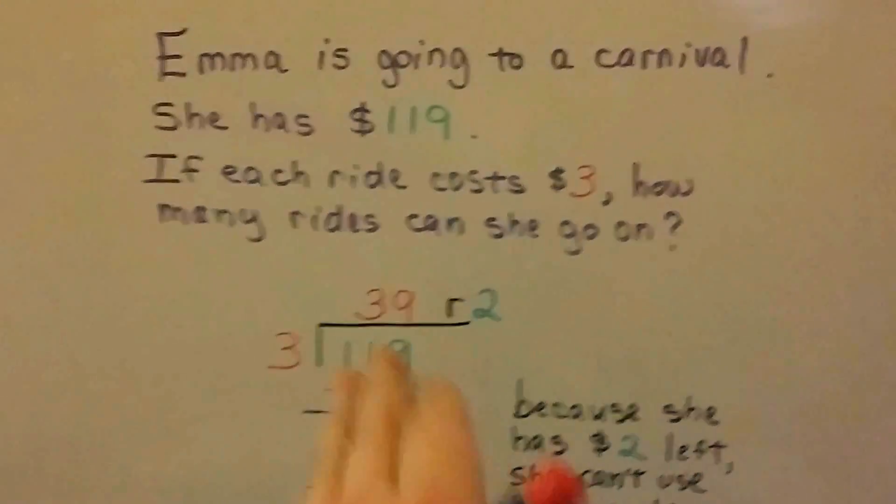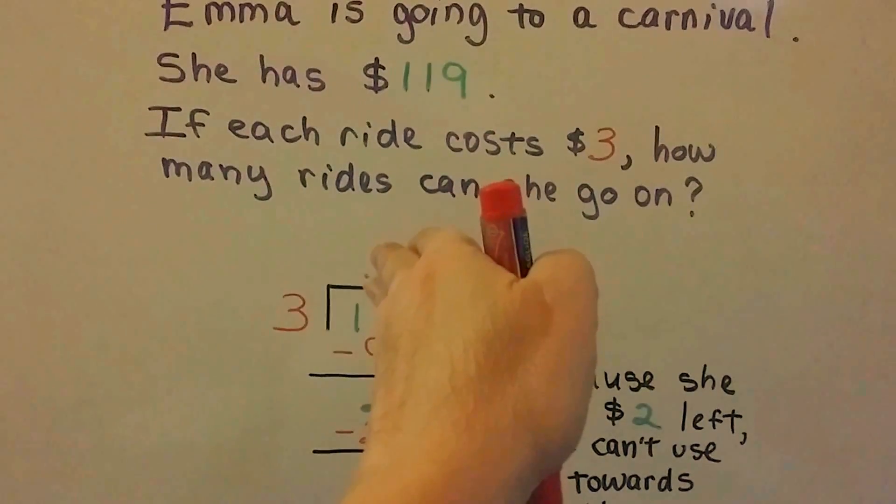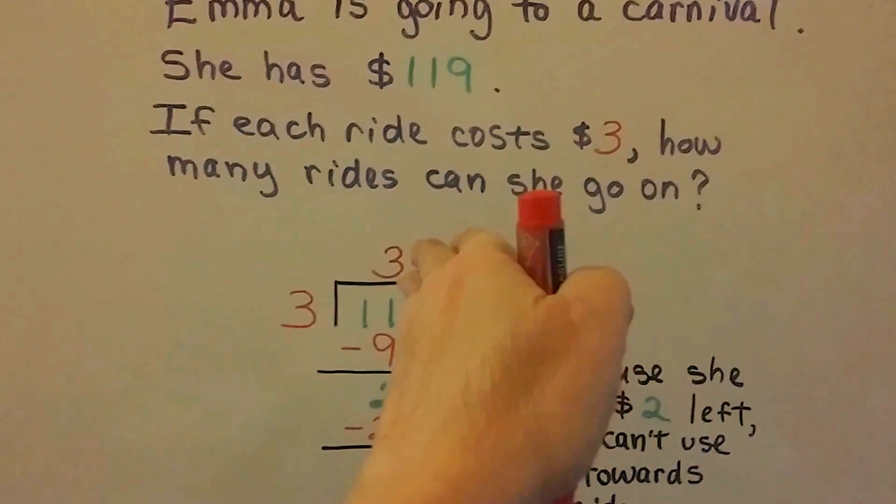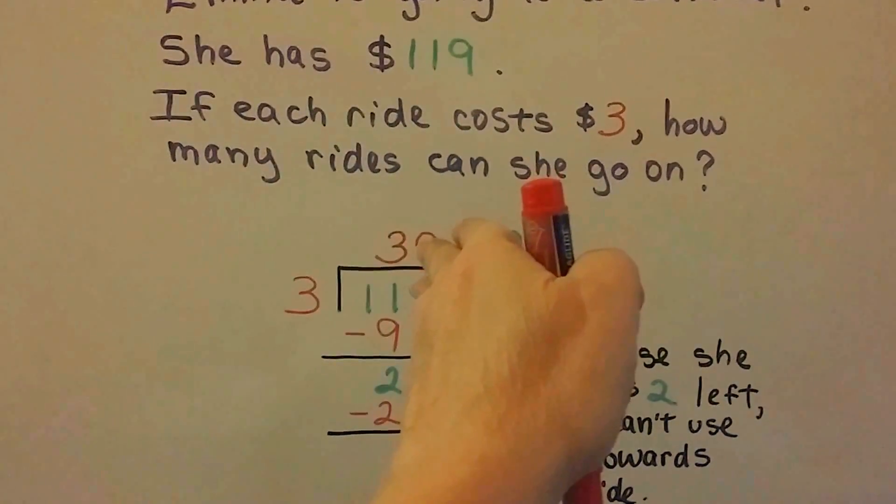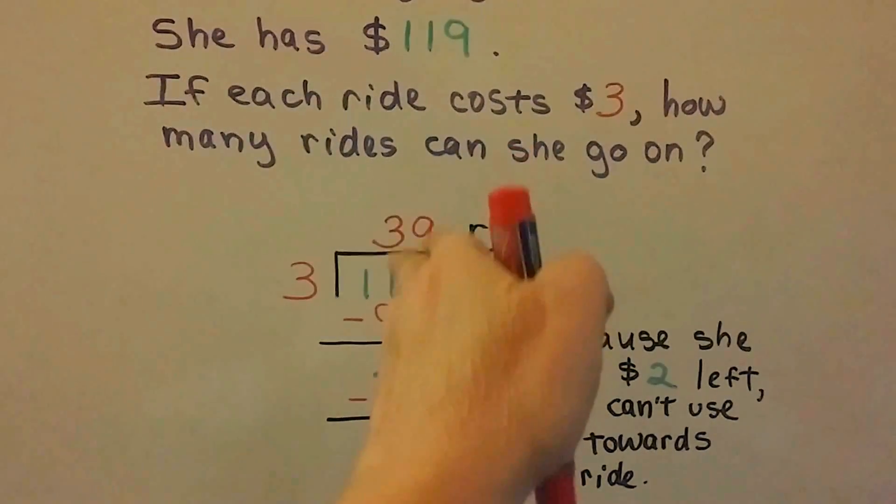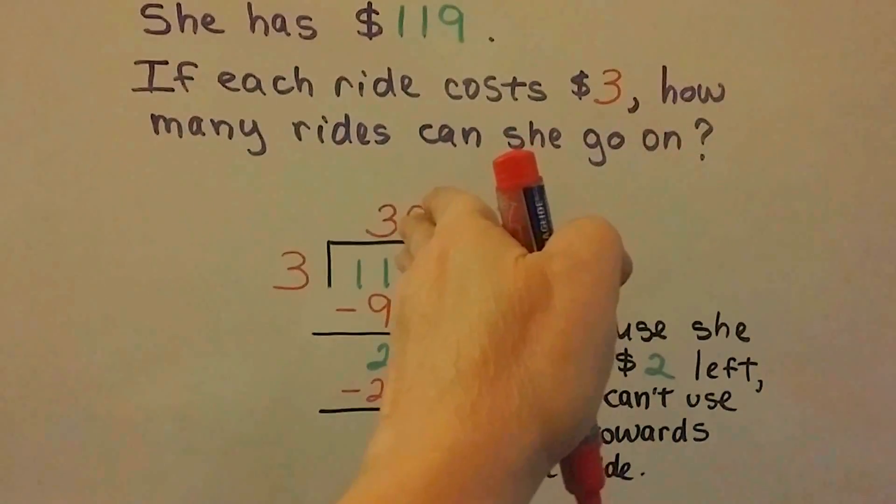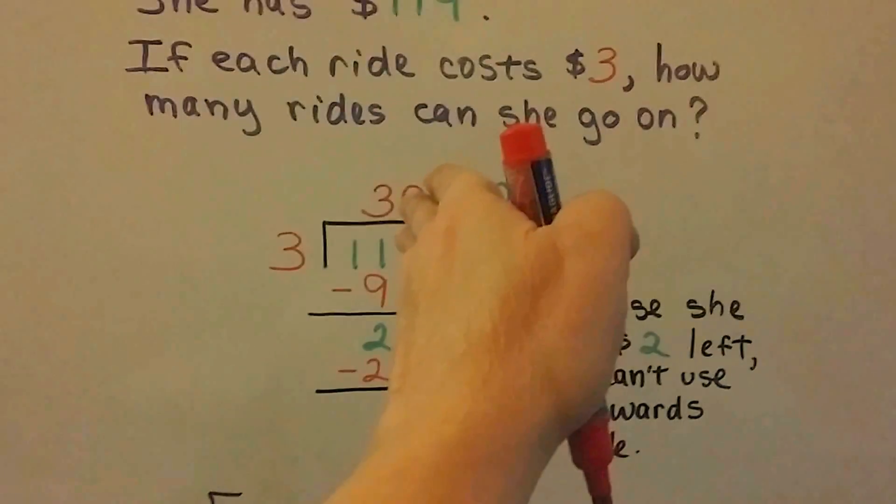And we ask ourselves, how many times can 3 go into 1? We're just doing the 1. None. So we don't put an answer above it. How many times can it go into 11? Well, 3 times 3 is 9. So we can do that. We put the 3 above this 1 in the 1's place right here. It's really the 10's place, but right now it's the 1's place. And 3 times 3 is 9. We do our subtraction, and we get this 2 down here.